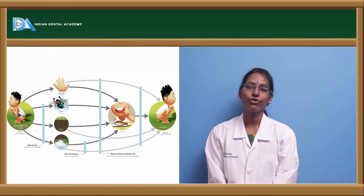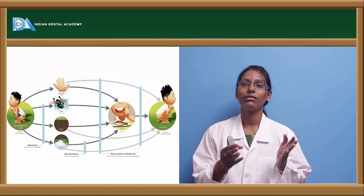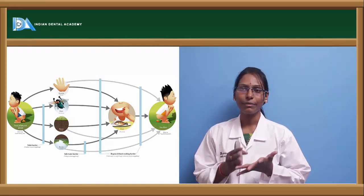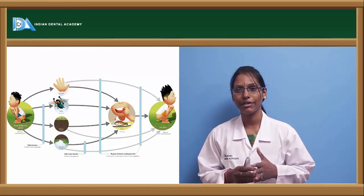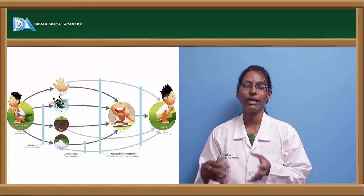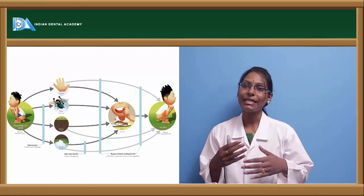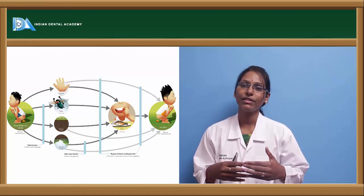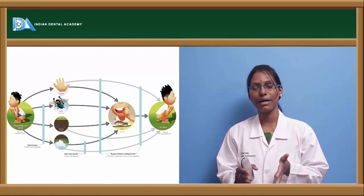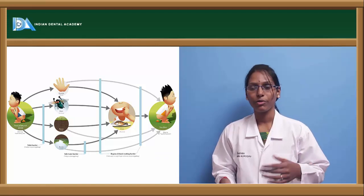Transmission occurs by contaminated food and water, where the bacilli travel via various vectors such as flies, houseflies, improperly washed hands, and contaminated water. The bacilli enter through food, the next person becomes infected by consuming that contaminated food or water, and in turn this infected person passes the bacilli in stools and water, continuing the cycle.